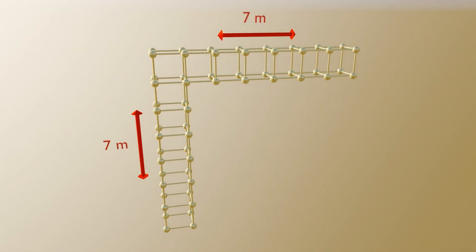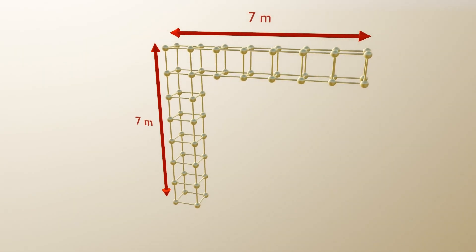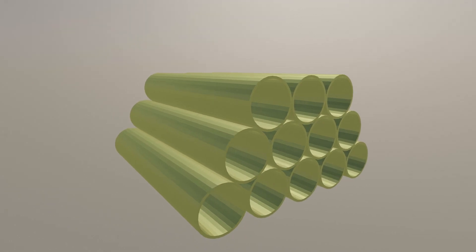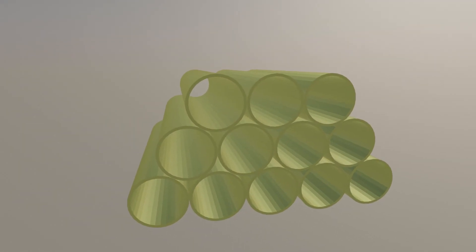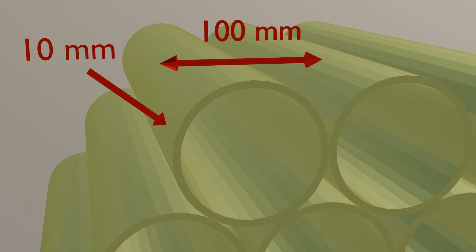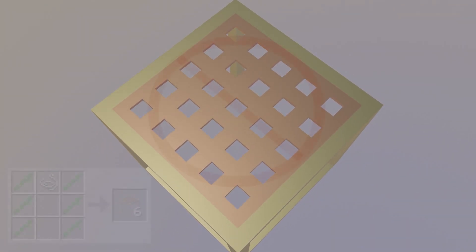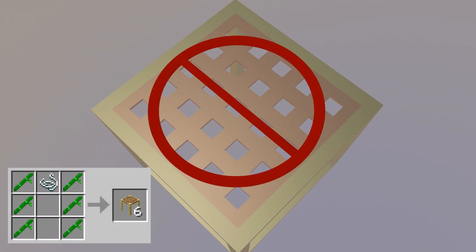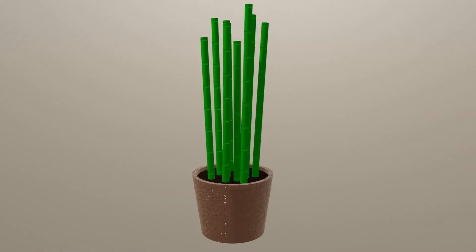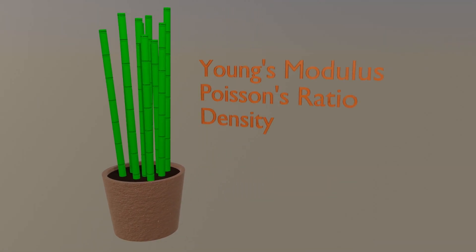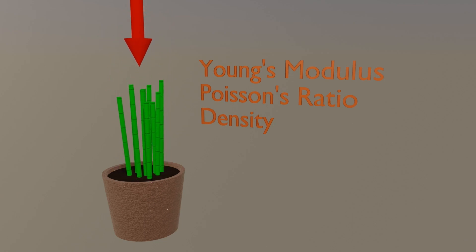Each Minecraft block is a metre long, meaning our scaffold would extend 6 metres outwards from the edge of the central tower. The vertical and horizontal members in the scaffold are circular, with a diameter of approximately 100 millimetres and a wall thickness of 10 millimetres. We can ignore the mesh in the middle of the scaffold, which, given the crafting recipe of scaffolding, is just string and would contribute minimally to the structural performance. We also need to input the materials of the structural members, specifically the Young's modulus, density and Poisson's ratio, all of which impact the way the structure will act under loading.